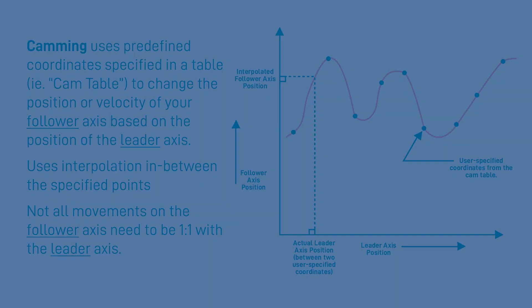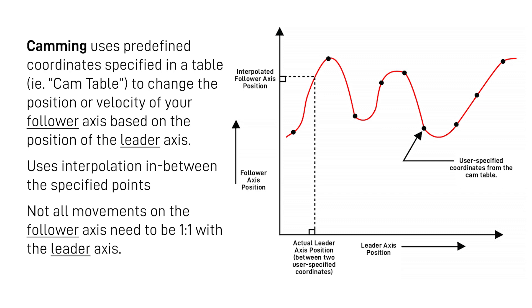Let's first look more in-depth at camming. Like we mentioned, camming uses a predefined set of coordinates specified in our cam table to change the position or velocity of your follower axes based on the position of your leader axis. That is what we are effectively seeing in our image. In our cam table we had specified a non-linear set of follower axis positions. So as our leader axis, also known as the master axis, moves, our follower axis moves to an appropriate point based on what we specified in our table.